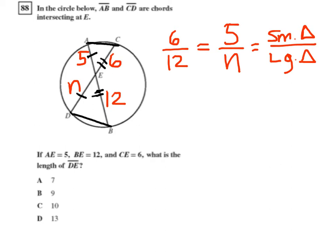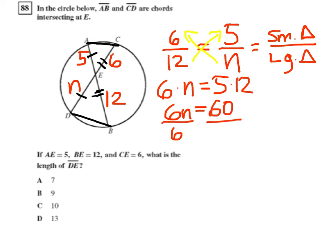All I really need to do at this point is just cross multiply and solve for my variable. So I get 6 times N on one side is equal to 5 times 12 on the other, which gives me 6N equals 60. Divide both sides by 6. The 6 and the 6 cancel to 1. 1 times N leaves me with just N. 60 divided by 6 leaves me with 10. That's our answer, C: 10.